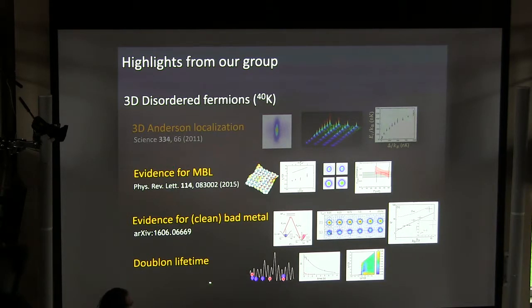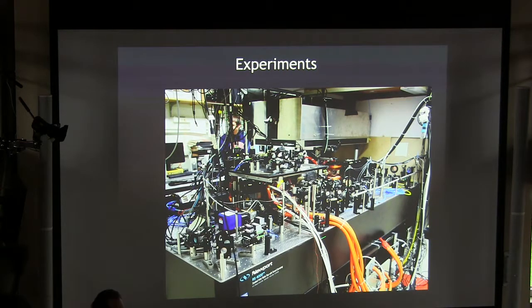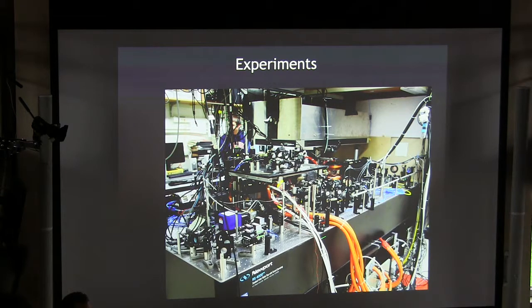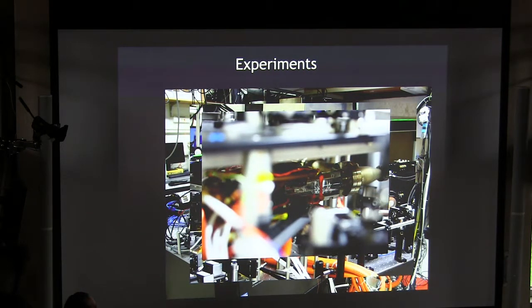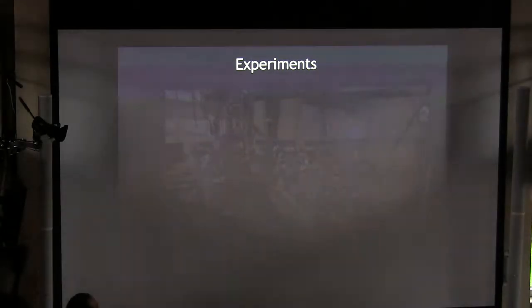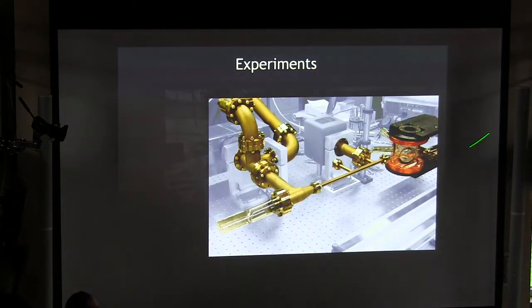I'm going to sort of read through these different results here, and I'll start with just a basic introduction to how our experiments work. We have an experiment — it's slightly old-fashioned — where we trap and cool potassium-40 atoms in a glass cell into high vacuum. It's kind of an old-fashioned system where we actually move atoms with a cart. We're trying to revamp this now and improve our cycle time.